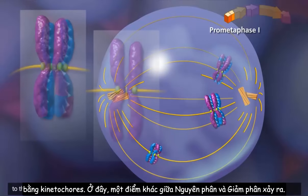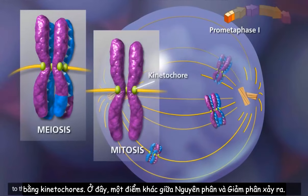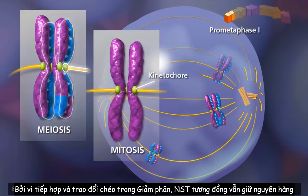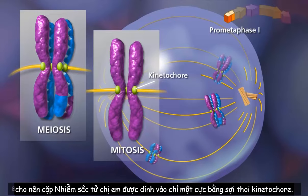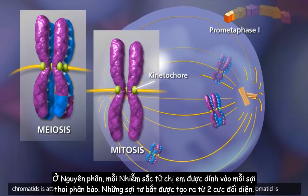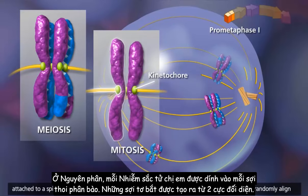Here, another key difference between mitosis and meiosis occurs. Because of synapsis and crossing over in meiosis, homologous chromosomes remain aligned, so that a pair of sister chromatids is attached to only one pole by the kinetochore microtubules. In mitosis, each sister chromatid is attached to a spindle fiber, with the fibers originating from opposite poles.